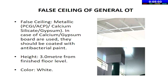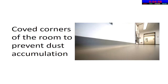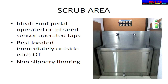The color of the ceiling should preferably be white, and there should be a minimum height of 3 meters from the finished floor level. Corners of the room should be coved or rounded off to prevent dust accumulation and for easy cleaning. The scrub area has to be located immediately outside each OT. The flooring in this area should be non-slippery, and taps should be either foot pedal operated, elbow operated, or infrared sensor operated.